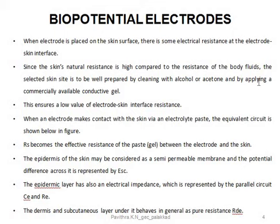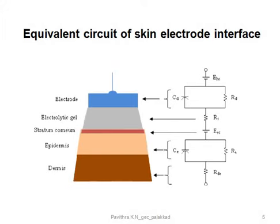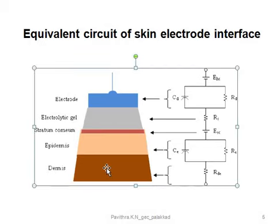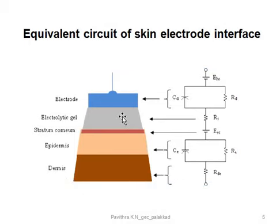Cleaning ensures a low value of electrode-skin interface resistance, which allows proper measurement of bioelectric potential. When an electrode makes contact with the skin through an electrolyte paste, the equivalent circuit is as shown in the figure. The three layers from the bottom are the skin surface, and the electrode is placed above the skin surface by means of an electrolytic gel.